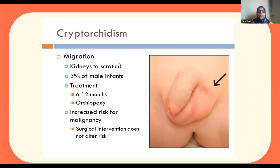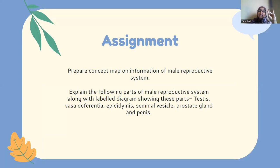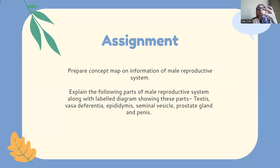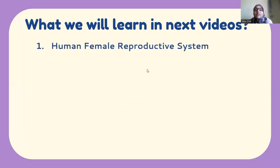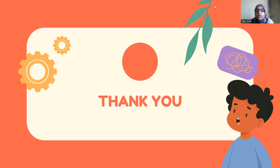In this video we discussed the accessory glands — prostate gland, seminal vesicle, and Cowper's gland — the substances they secrete and their role in the reproductive process and in maintaining the proper environment for sperm. We also covered the external genitalia including the semen, scrotum, penis and its linings, and the condition cryptorchidism. In the next video we will discuss the female reproductive system. Revise, make notes of your doubts, and we will discuss in the live class.